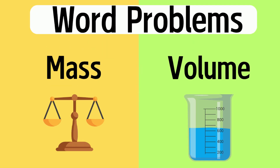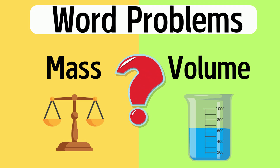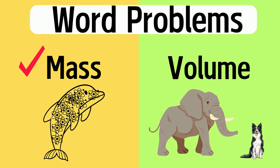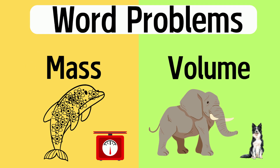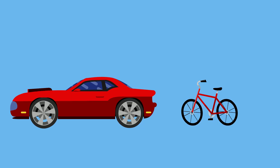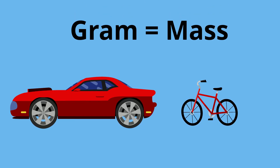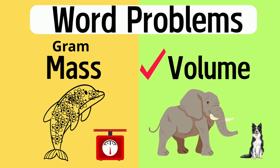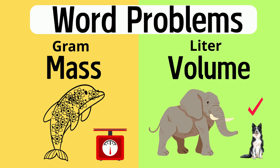To begin with, what does mass and volume measure? Mass is how much matter is in an object. The larger the mass, the heavier the object will be. This car has a larger mass than a bicycle. In the metric system, whenever you see 'gram,' you know that mass is being measured. Volume is a measure of how much space an object takes up. This elephant takes up a lot of space and has a larger volume than this dog. Whenever you see the word 'liter,' you know that volume is being measured.